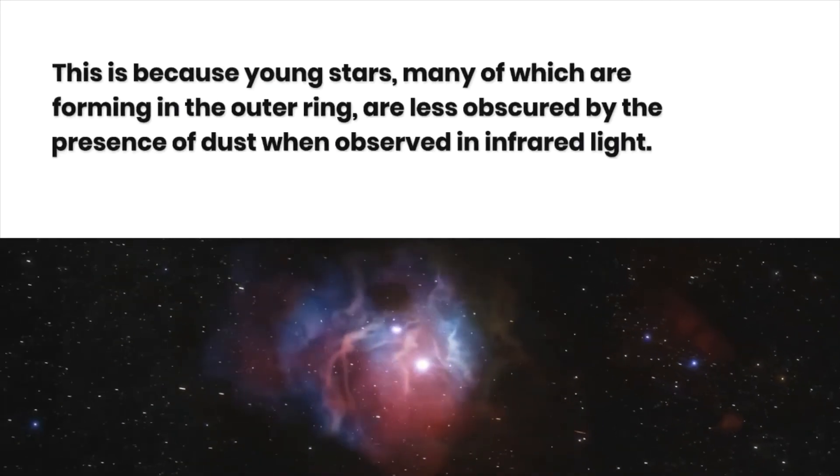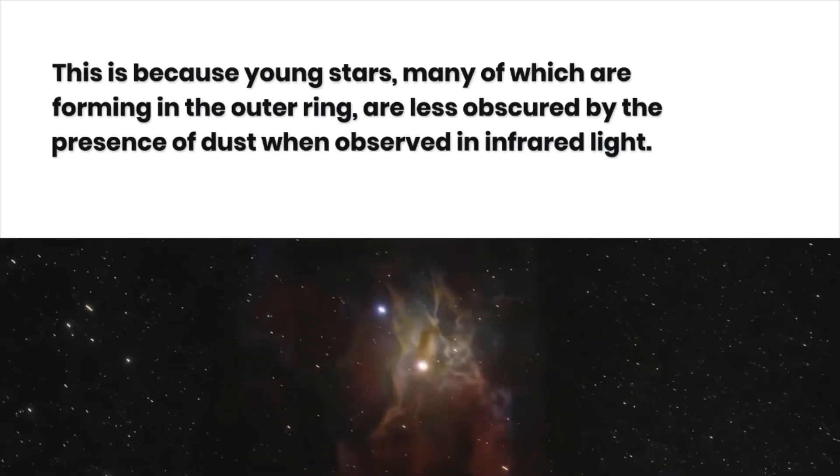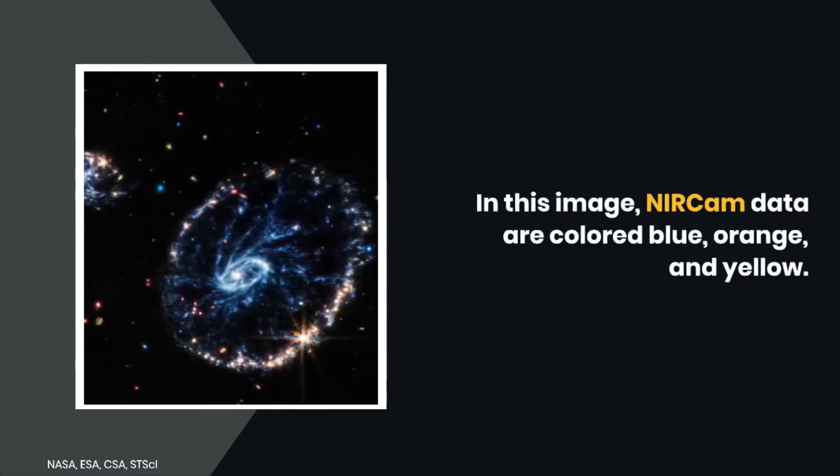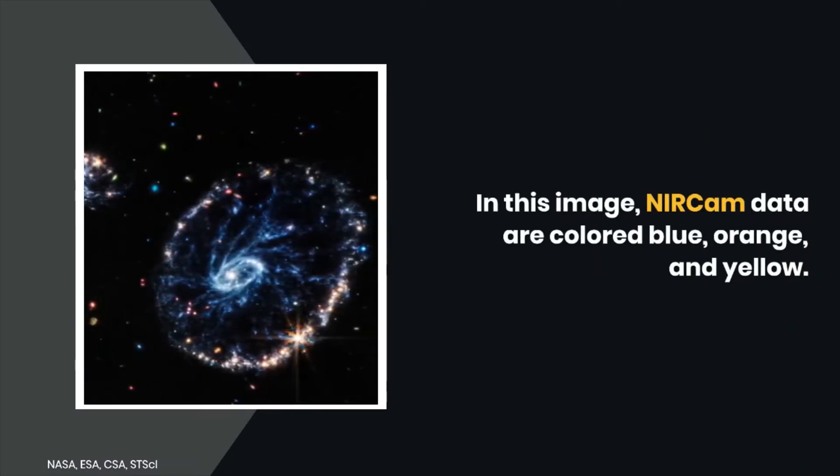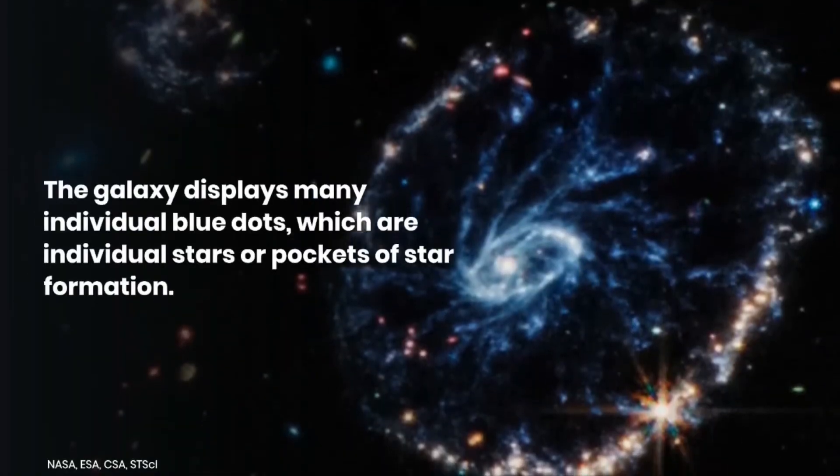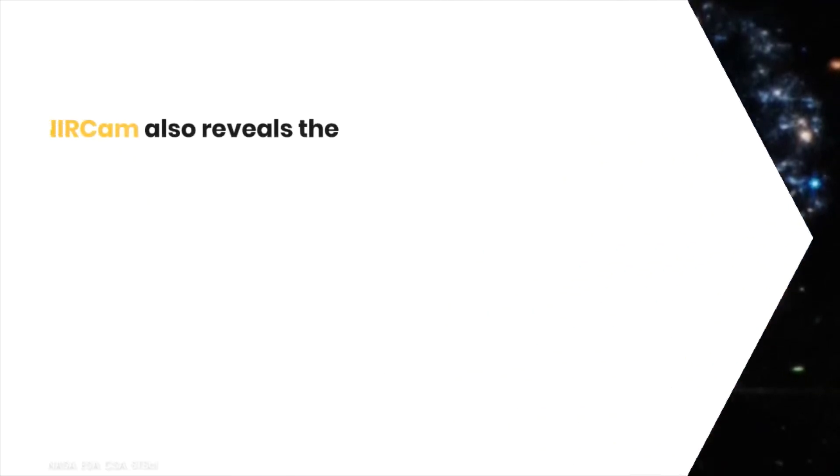In this image, NIRCam data are colored blue, orange, and yellow. The galaxy displays many individual blue dots, which are individual stars or pockets of star formation.